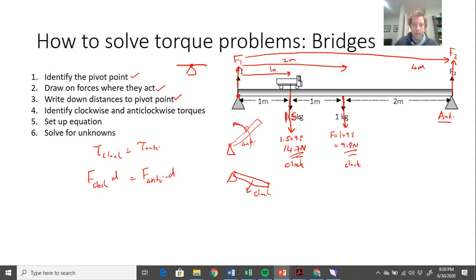So my clockwise forces are 14.7 newtons times 1 meter, and I've also got plus this one here, 9.8 times 2 meters, and that equals my F2, which I don't know yet, times 4 meters. So now I've got a whole bunch of numbers I can solve for.